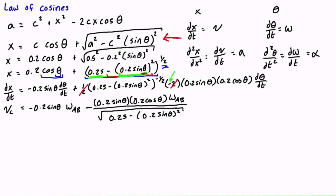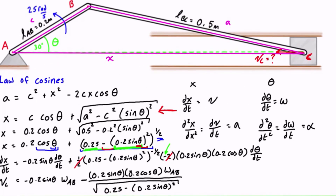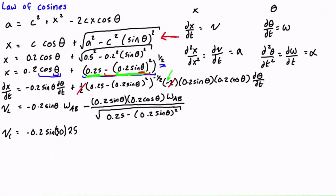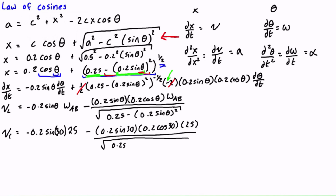Now we fill in the known values. Substituting θ = 30° and ω_AB = 25 rad/s: vc = −0.2·sin30°·25 − (0.2·sin30°·0.2·cos30°·25) / √(0.25 − (0.2·sin30°)²).